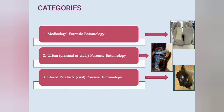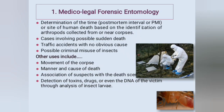There are three categories of forensic entomology: the first is medical-legal forensic entomology, the second is urban/criminal or civil forensic entomology, and the third is stored product forensic entomology. Medical-legal forensic entomology involves determination of the post-mortem interval (PMI) or site of human death based on identification of arthropods collected from or near the corpse, cases involving possible sudden death, traffic accidents with no obvious cause, criminal misuse of insects, and other uses including movement of the corpse, manner and cause of death, and association of suspects with the death scene.